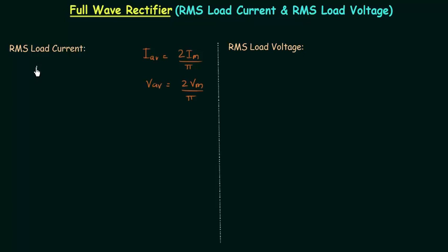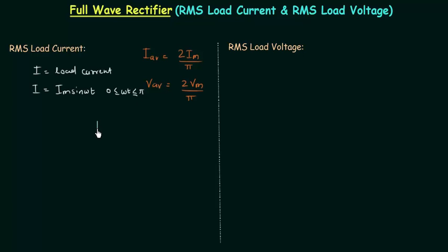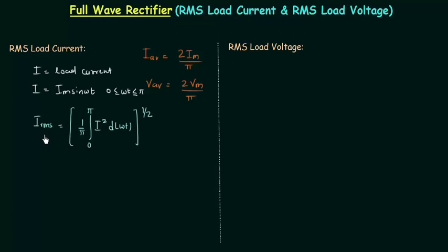Let's say the load current is equal to I. The load current I is equal to Im sin(ωt) when ωt is from 0 to pi. I will first calculate the square of the load current, then I will calculate the mean of I² by integrating it from 0 to pi with respect to ωt. This is the mean of I², and finally we will calculate the square root — this gives us IRMS, the RMS value of the load current.